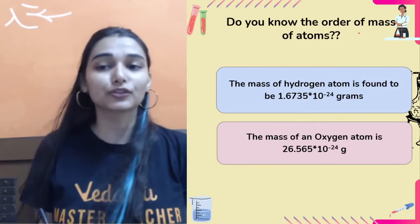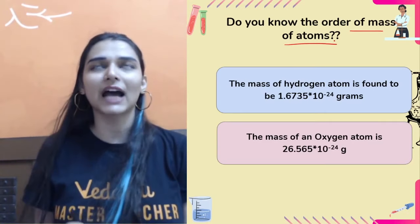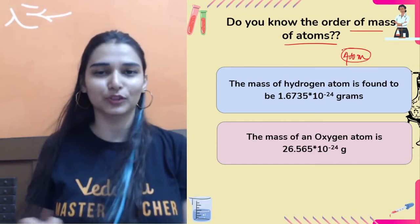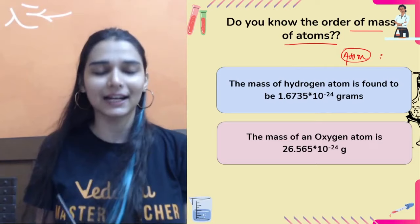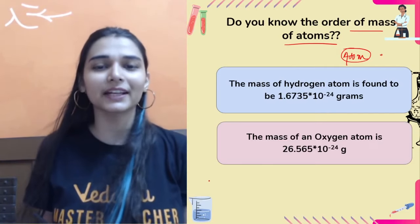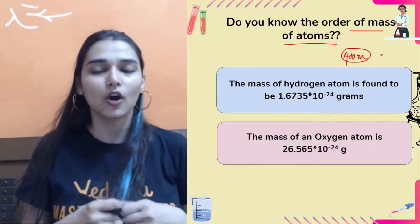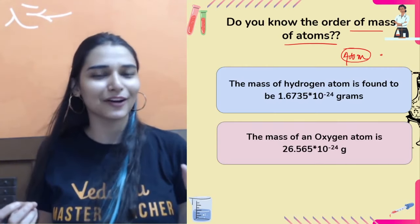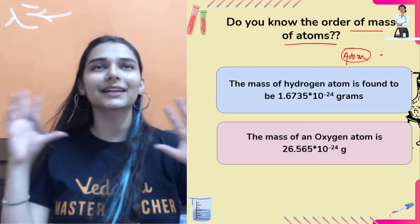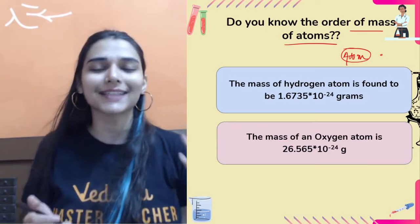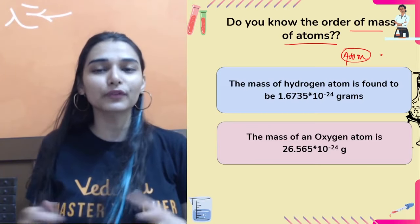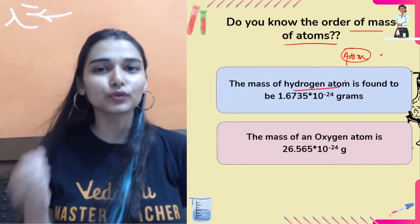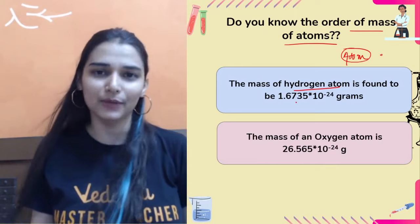Do you know the order of mass of an atom? Atoms are incredibly small. Even a simple sheet of paper has millions of atoms present in it. So what would be the mass of a single atom? Just imagine the mass of a hydrogen atom — the first element in the periodic table.